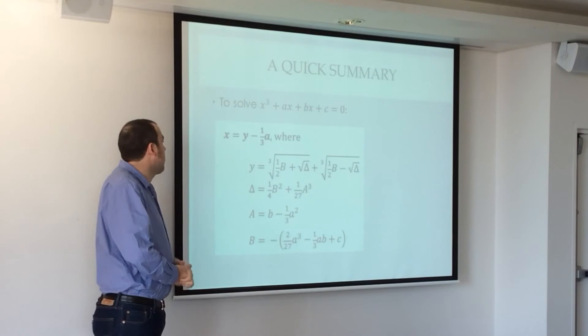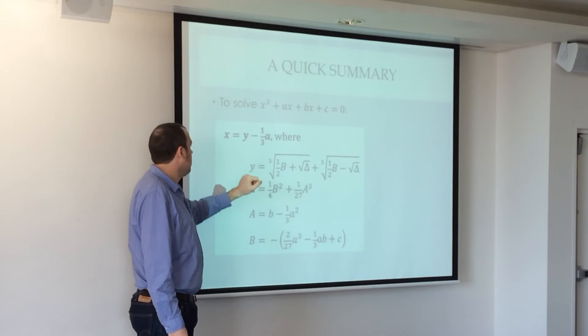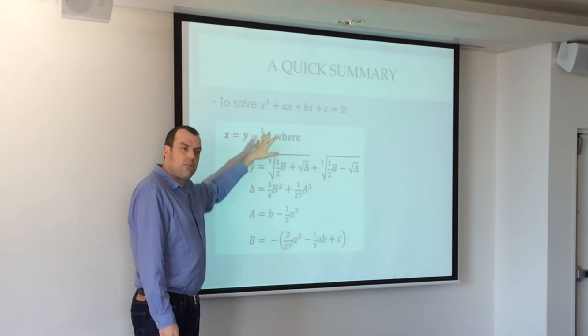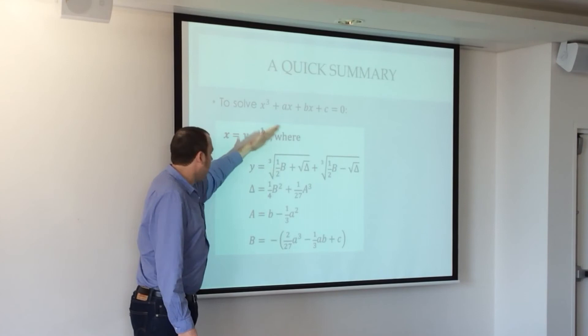So here's a quick summary so far. To solve the general cubic, you can make this substitution. And then, well, sorry, it's not so much make this substitution. That's the machinery behind this, right? So to solve it, x does equal this, where bang, bang, bang, bang.